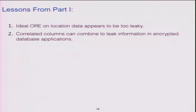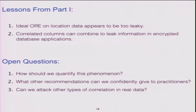The lessons from part one: even if we went through all the trouble to develop ideal ORE, or modified the server to support interactive ideal ORE, on location data it appears to be just too leaky. It's because correlated columns are combining to leak information in an unexpected way. The open question is how to quantify this — we tried approaches like Spearman correlation but nothing seemed to give a crisp test to help a practitioner.